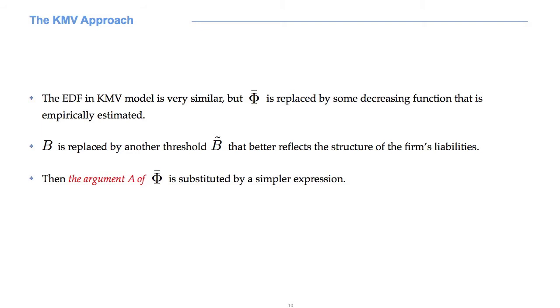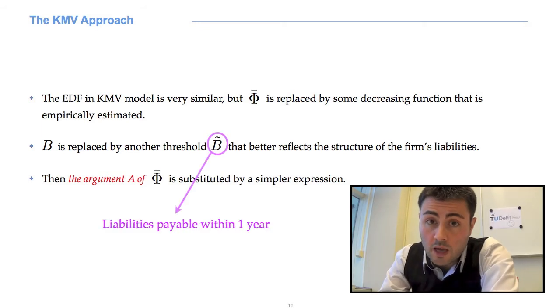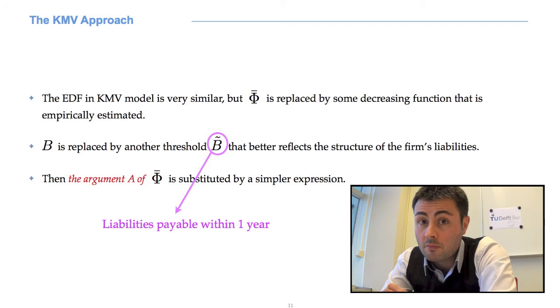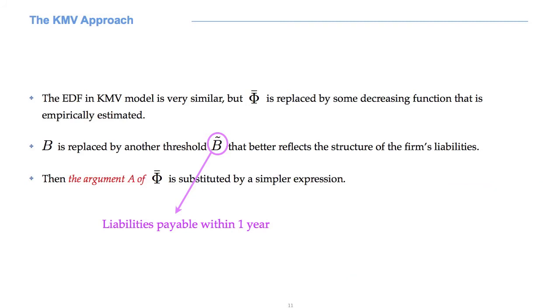Let's call the argument of phi bar A. The real EDF of KMV is quite similar, from a philosophical point of view. What changes is that phi bar is substituted with a decreasing function estimated from data. The threshold level capital B is replaced by another quantity that we can call B tilde. This quantity better reflects the liability structure of the company. Typically, B tilde represents the liabilities that are payable within one year.